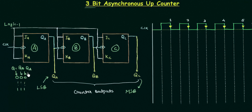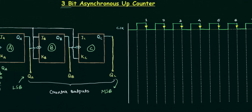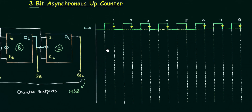The values of QA, QB, and QC give us the count, and these values depend upon the clock. This external clock is given to flip-flop A and it is negative edge triggered, so all changes in flip-flop A occur at the falling edge. I have already pointed out all the falling edges, so we can analyze the diagram without difficulty.